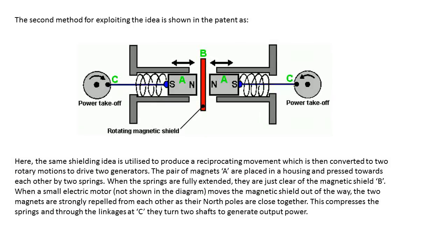When the springs are fully extended, they are just clear of the magnetic shield B. When a small electric motor, not shown in the diagram, moves the magnetic shield out of the way, the two magnets are strongly repelled from each other as their north poles are close together. This compresses the springs and through the linkages at C, they turn two shafts to generate output power.